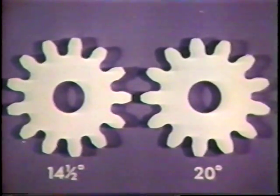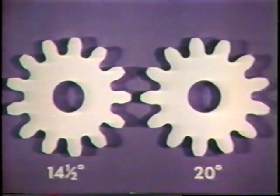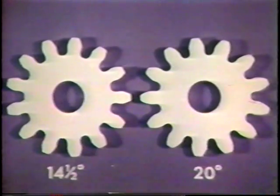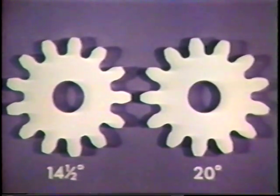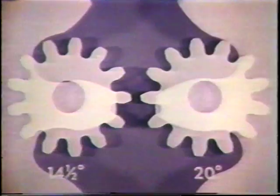The difference in the tooth shape of standard gears generated to operate with their mating members on standard center distance at 14 and a half and 20 degree pressure angles respectively is shown here. As the pressure angle is increased, it can be seen that the base of the 20 degree tooth on the right becomes stronger.